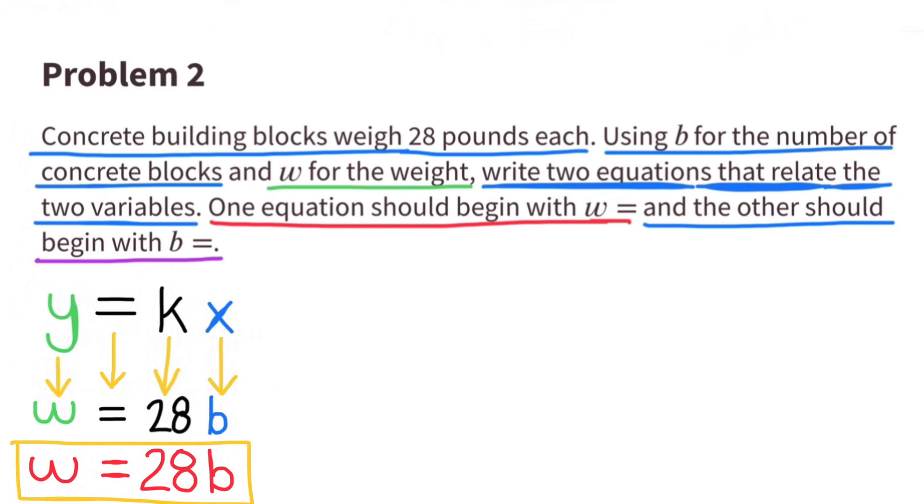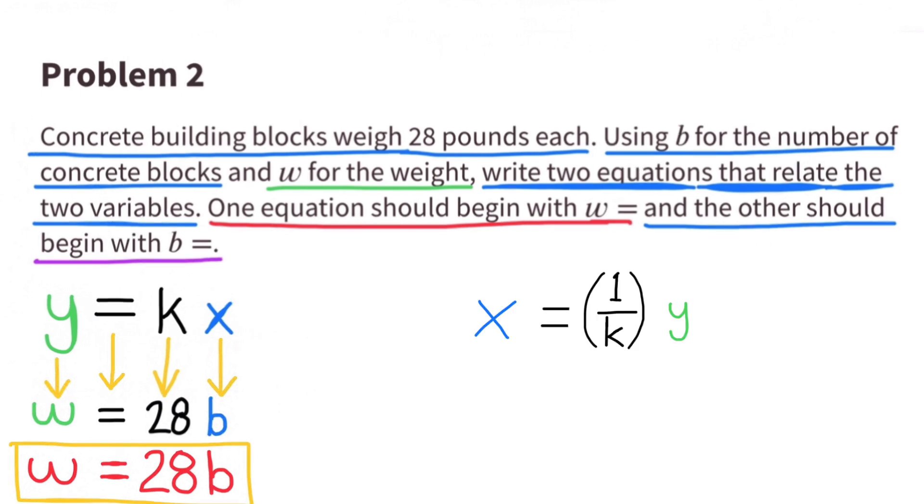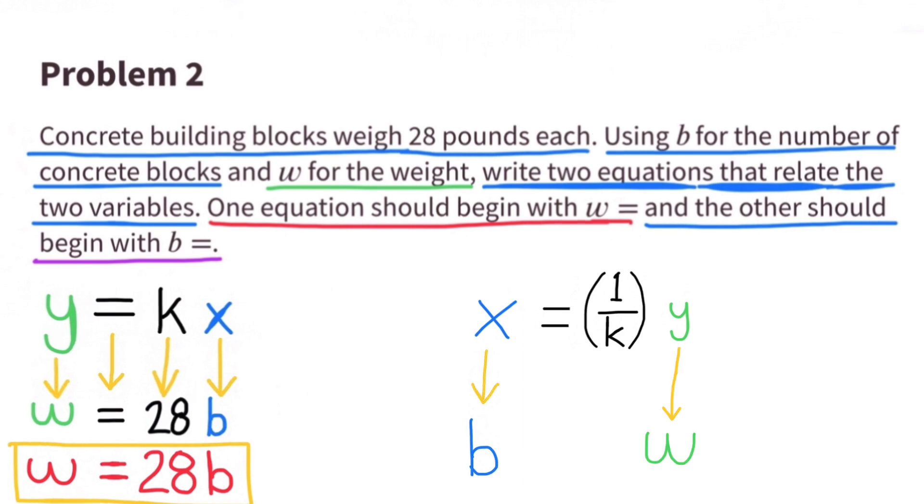Since there are two equations for each relationship, I'm going to use this equation to help me get started. x equals 1 divided by k times y, or x equals 1 over k times y. The x will be represented with the b blocks, for the number of concrete blocks. I'll replace the y with the w to represent the total weight.